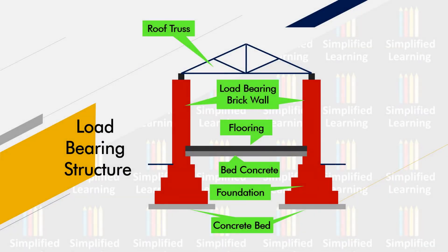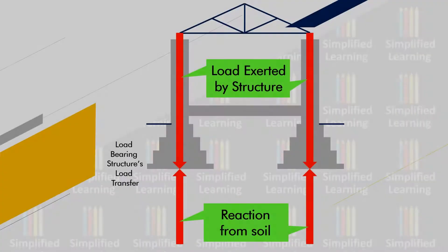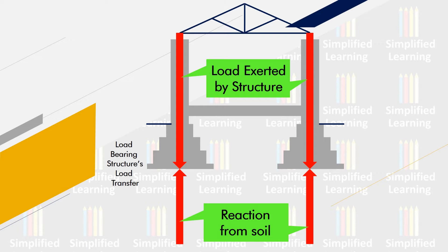Looking at the diagram, a roof truss or roofing structure sits on load bearing brick walls. The load bearing brick wall continues down to the foundation, where an expanded footing and concrete bed are provided, all placed on a hard strata. Load transmission is straightforward: whatever load the structure exerts is taken to the strata by the load bearing walls, to the soil, and the soil provides the reaction.